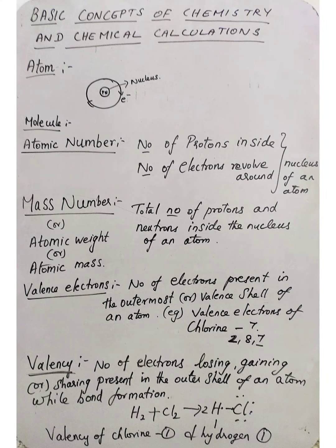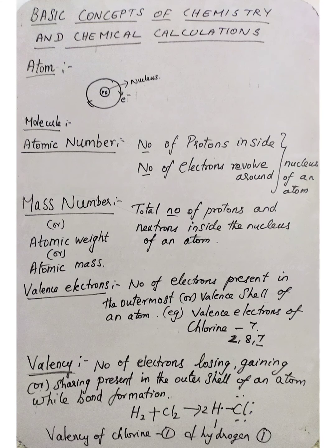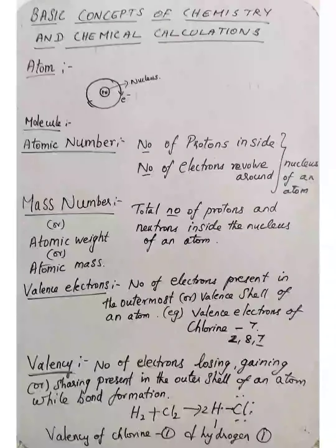Why do we say atom is divisible? You already learned the Atom Model in lower classes. The center part of an atom is the nucleus, and electrons revolve around the nucleus in fixed circular paths called orbits. Inside the nucleus, protons and neutrons are present, and around the nucleus, electrons are present. So atom is the smallest particle of an element.